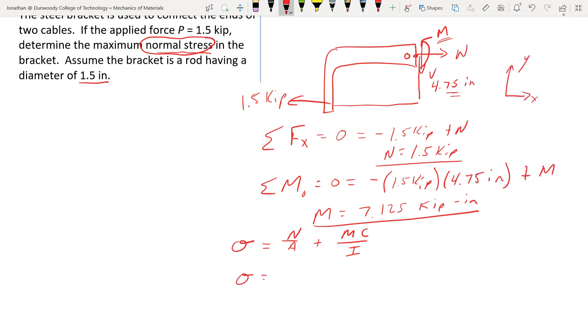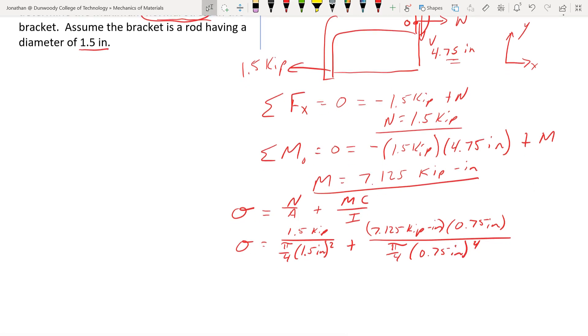We get sigma equals 1.5 kip. Our area is going to be pi over 4 times 1.5 inch squared. Plus M was 7.125 kip inch. C is going to be 0.75. And then that's all over I, which is pi over 4 times 0.75 inches to the fourth.